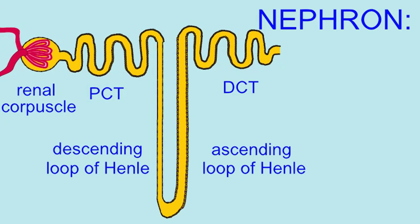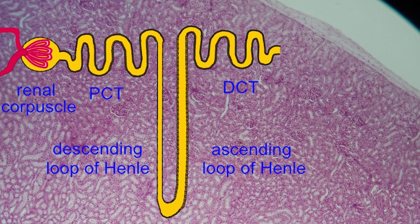Nephrons are the functional unit of kidneys. Each kidney possesses about a million of them. When one examines the kidney under the microscope, one can clearly see the sections of nephrons in the renal cortex and the renal medulla.